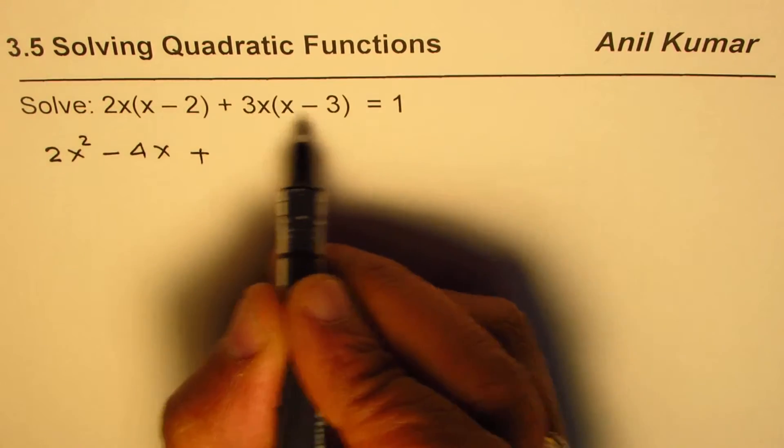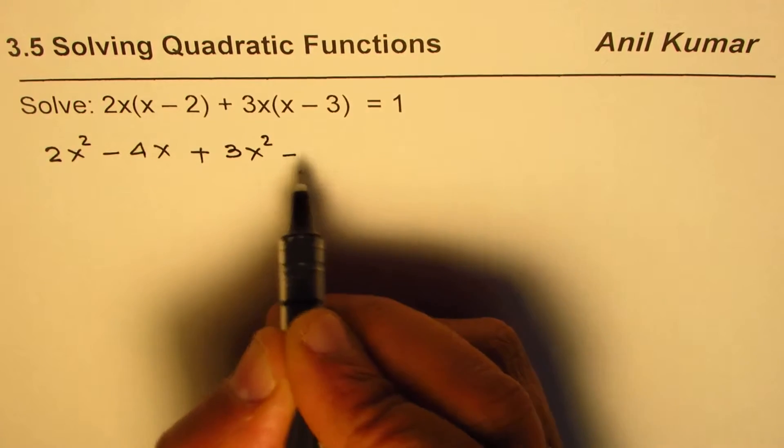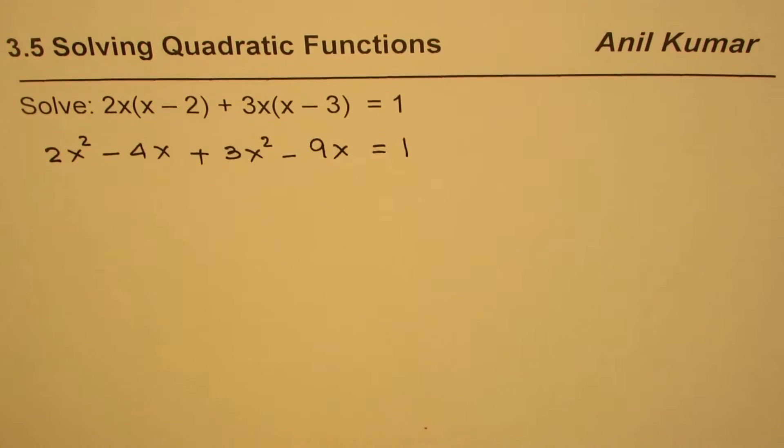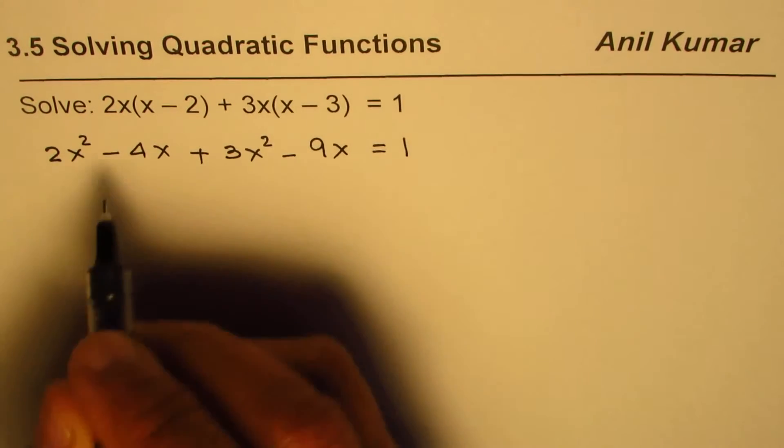Now, we'll multiply x minus 3 by 3x. We get 3x squared minus 9x equals 1. At this stage, we should combine the like terms.